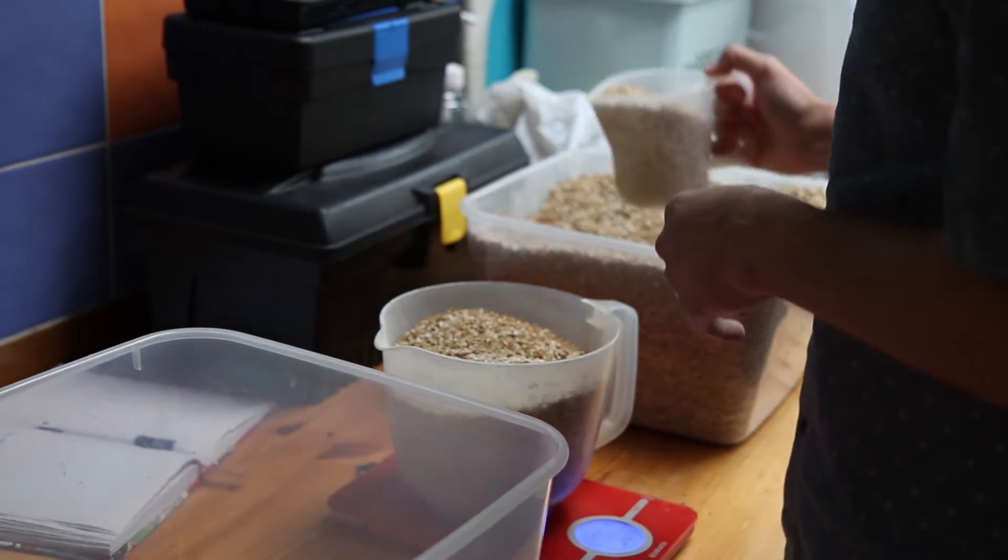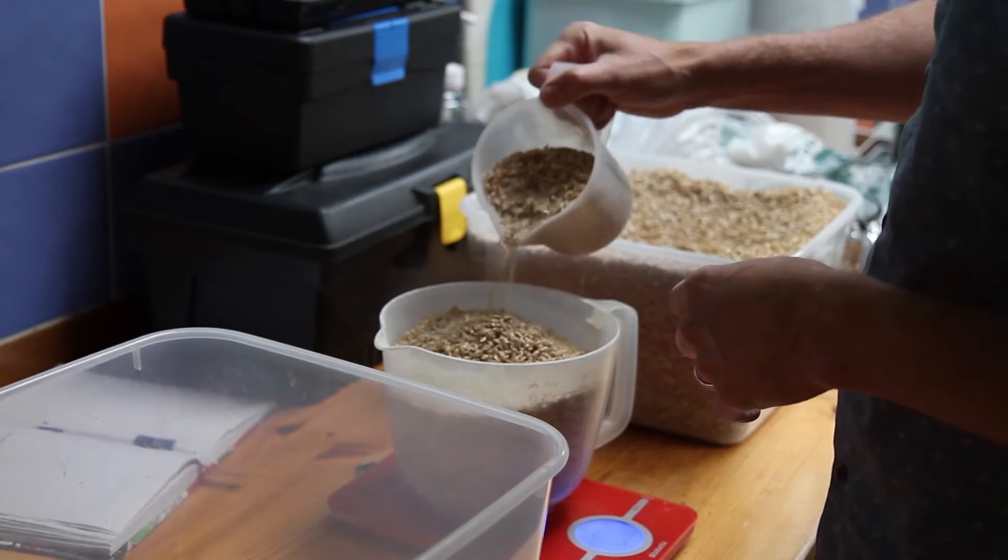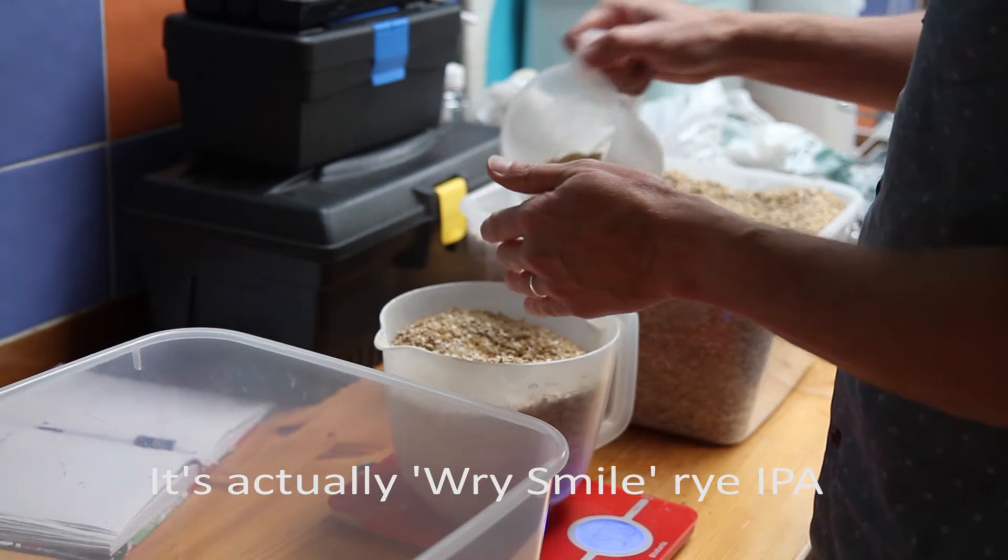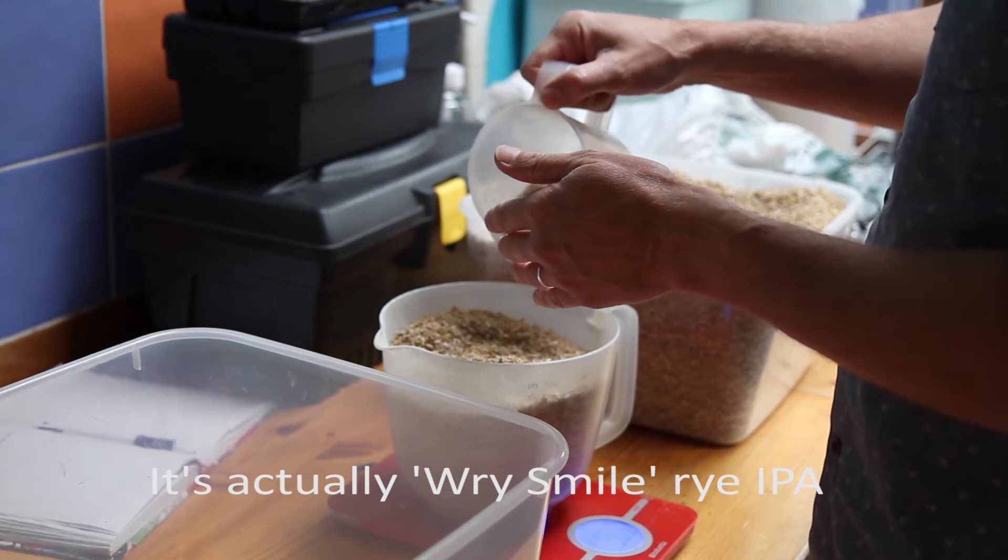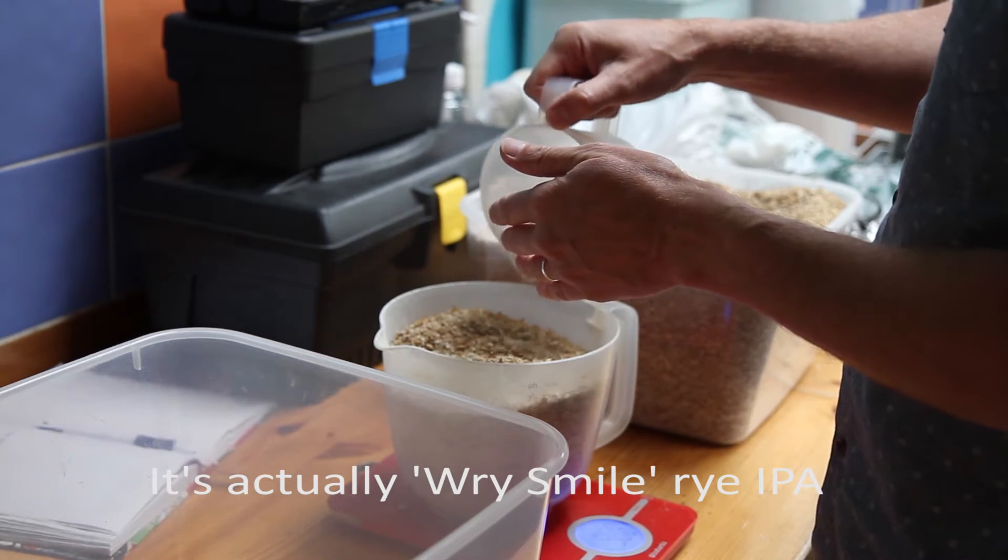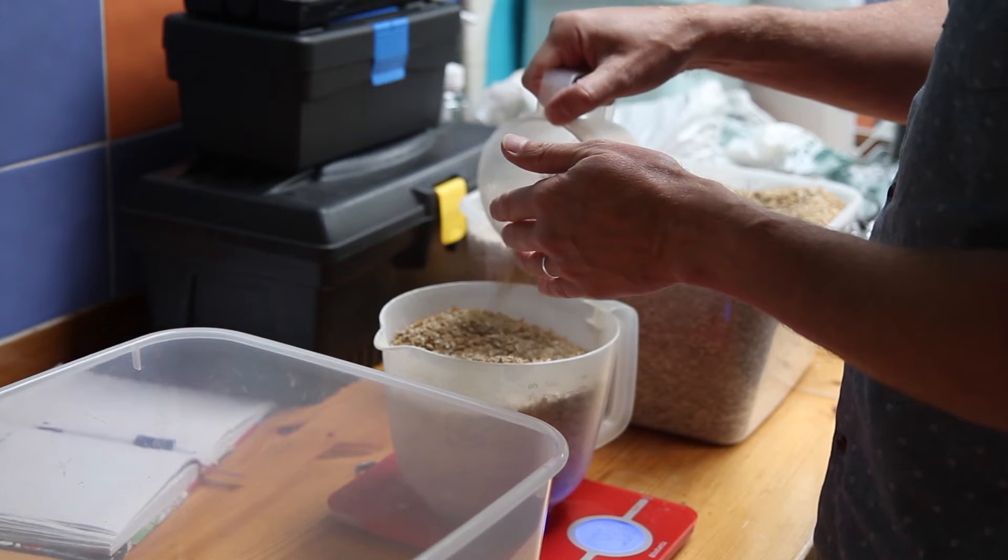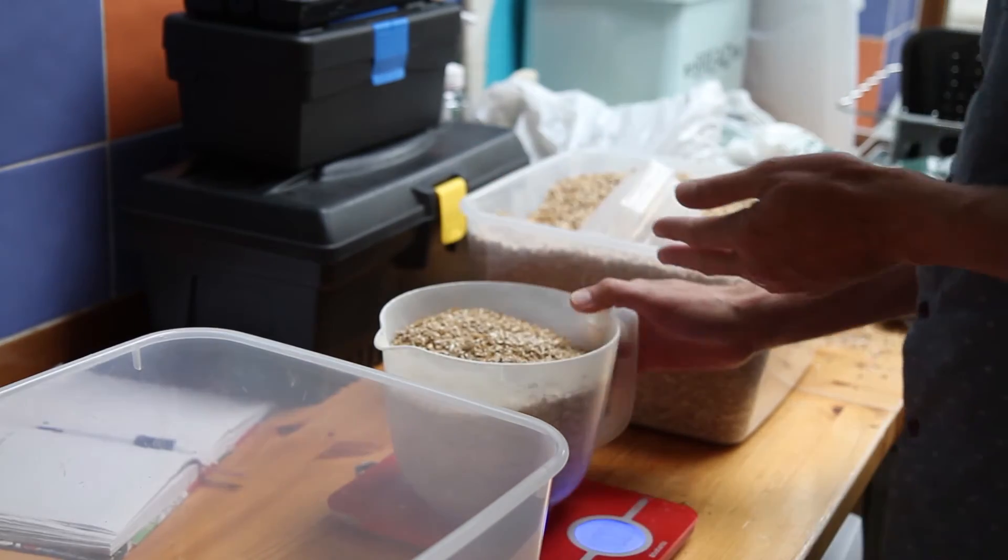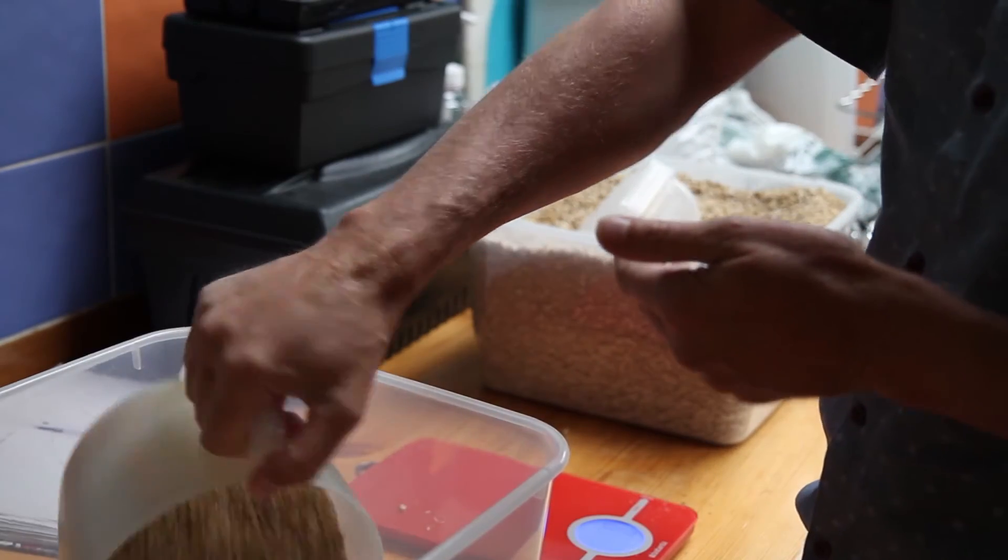I'm brewing a rye IPA today using Denny Kohn's rye IPA recipe. It's quite a strong beer, over 8%, so I am brewing a small volume. I'm only brewing 10 litres, but really well, 20 plus litres of nearly 9% beer.